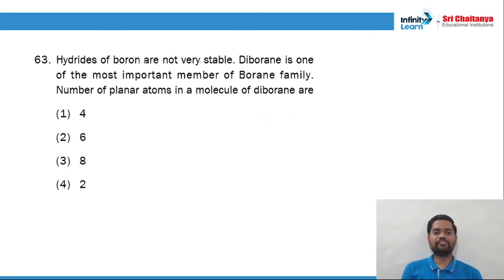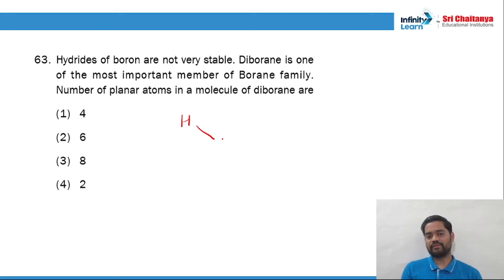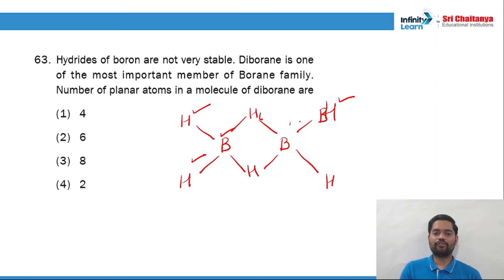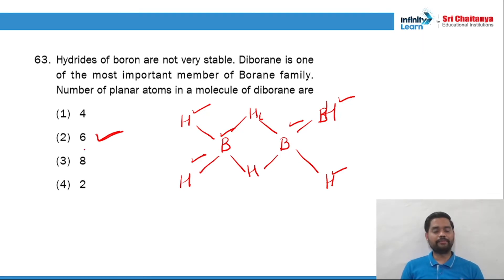Question 63: Diborane is one of the most important members of the boron family. Number of planar atoms in the molecule — if I draw diborane, and mark the plane, atoms in the plane are: 1, 2, 3, 4, 5, 6. There are 6 atoms in the plane. Remember this value.